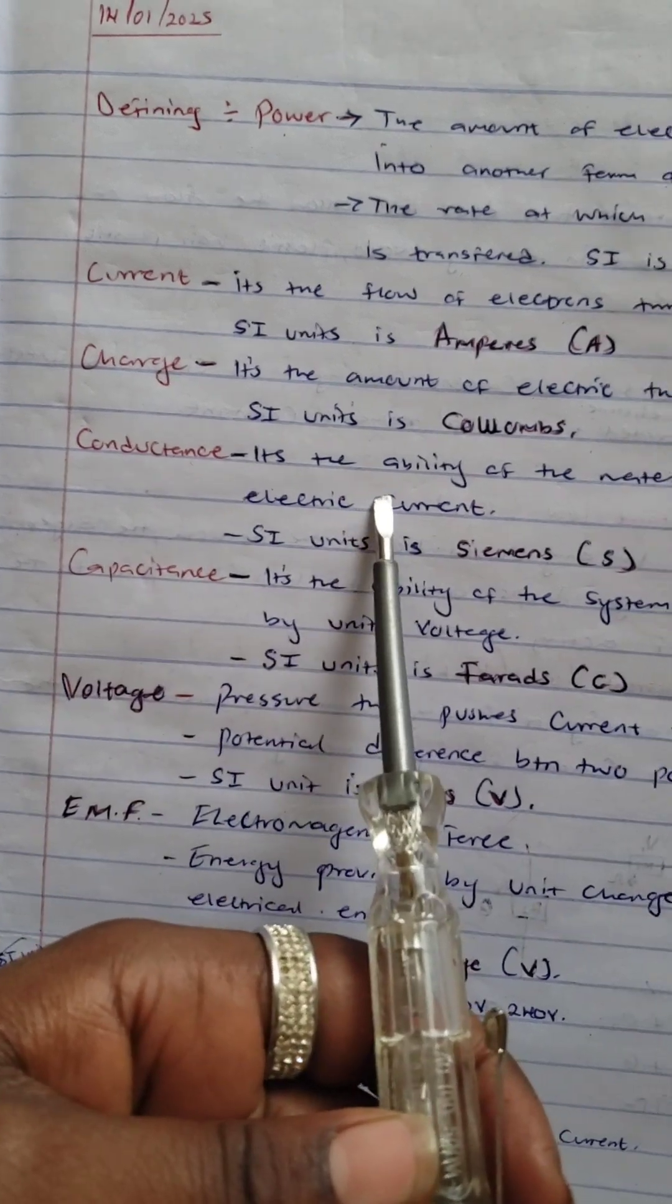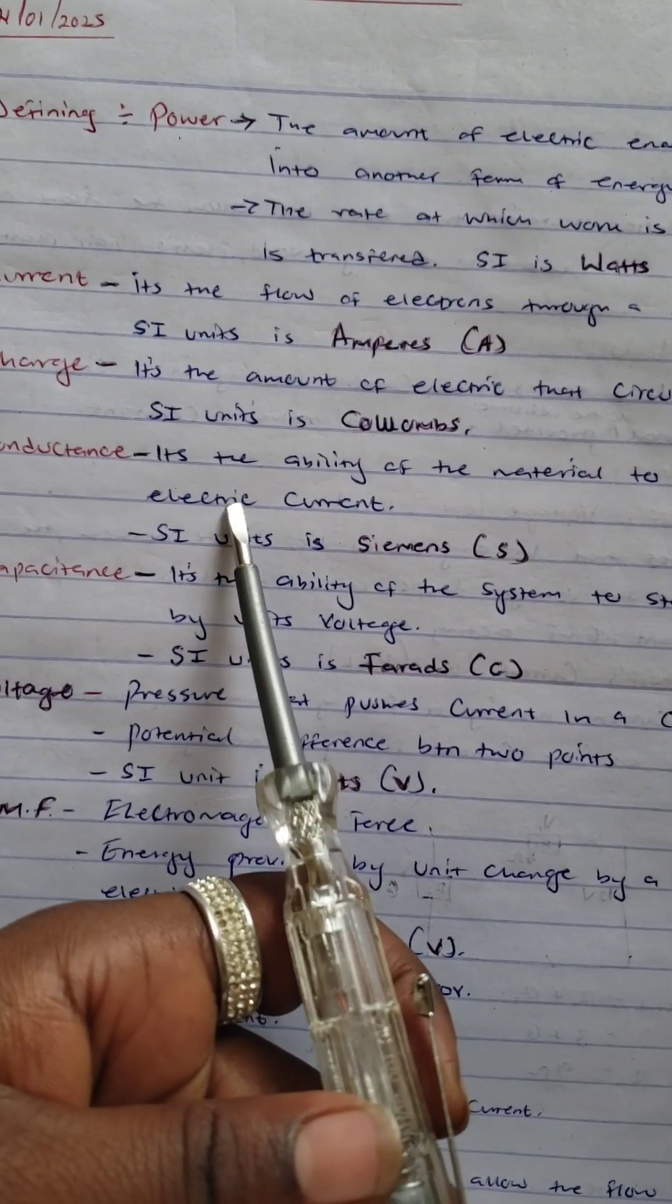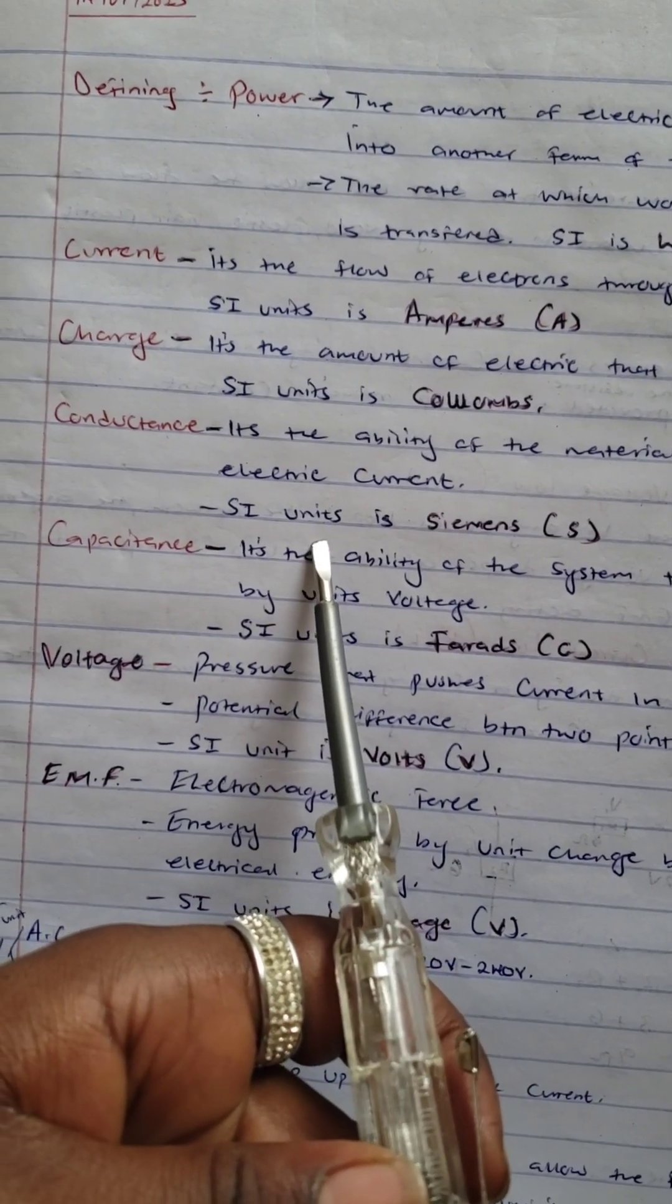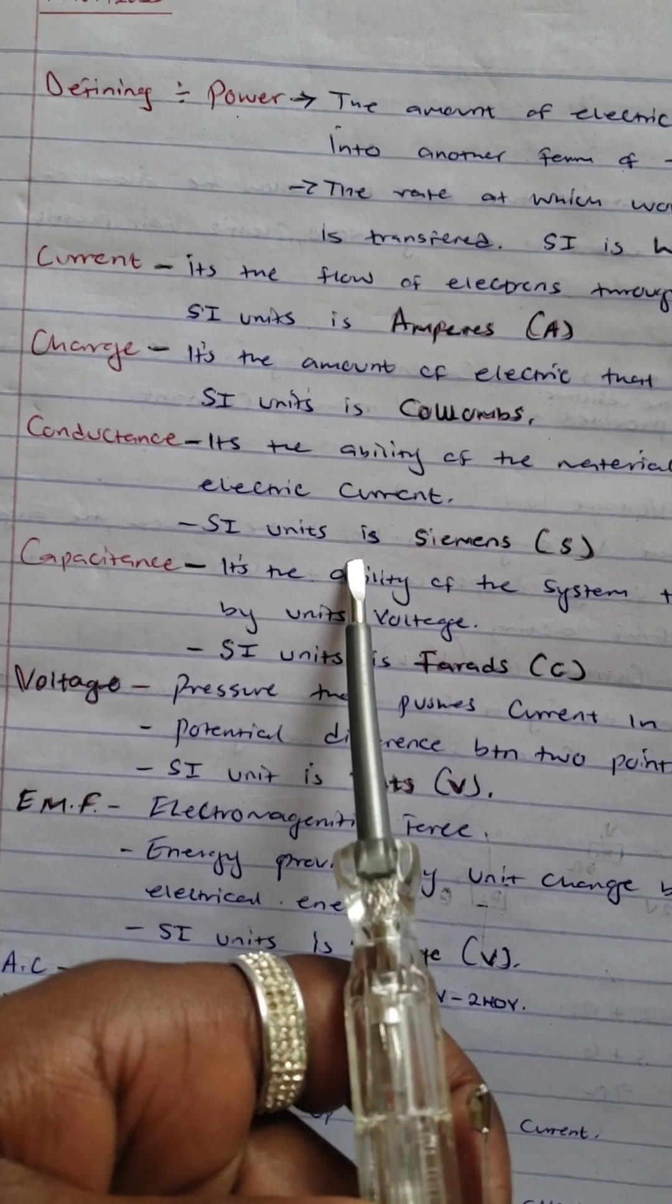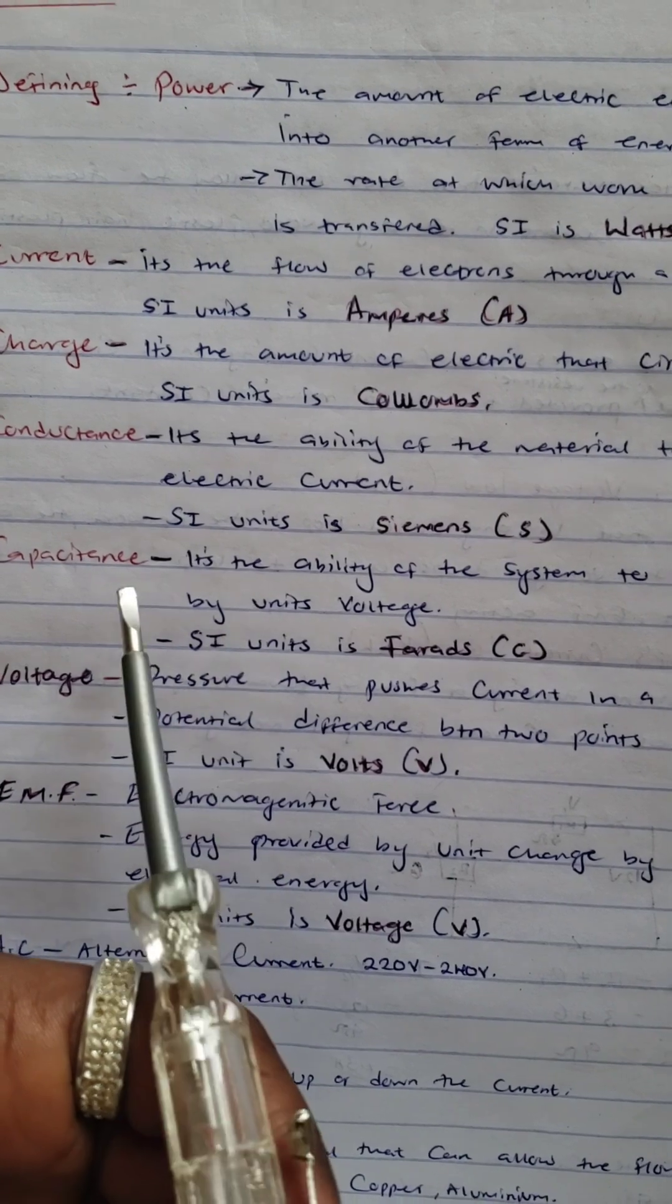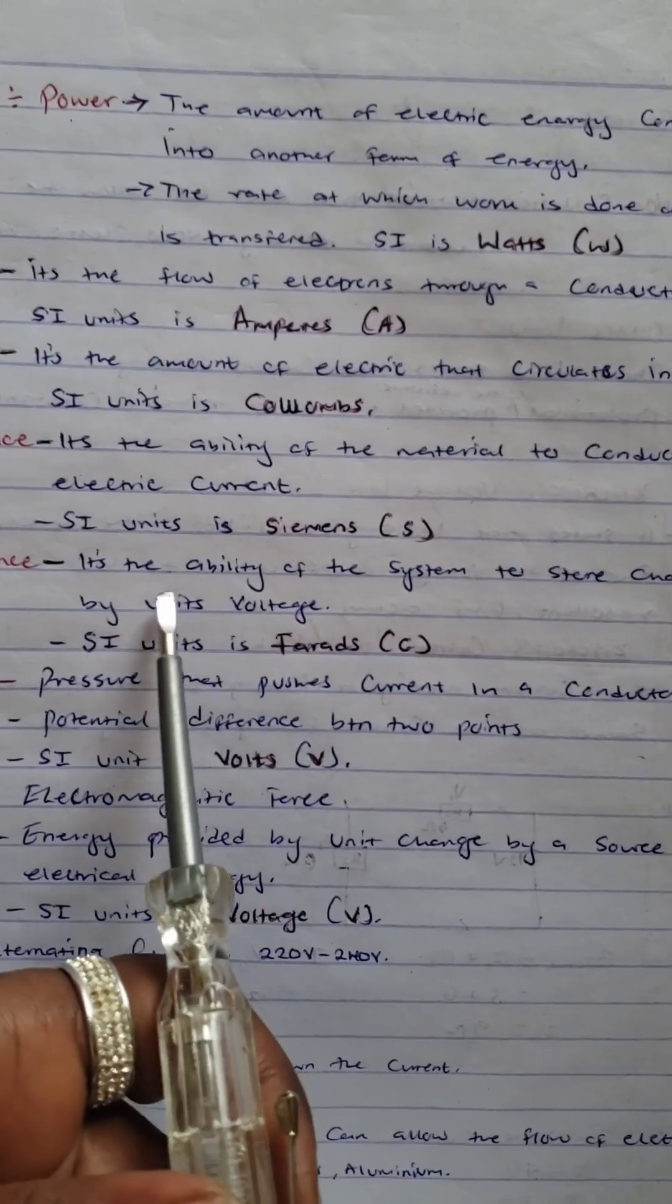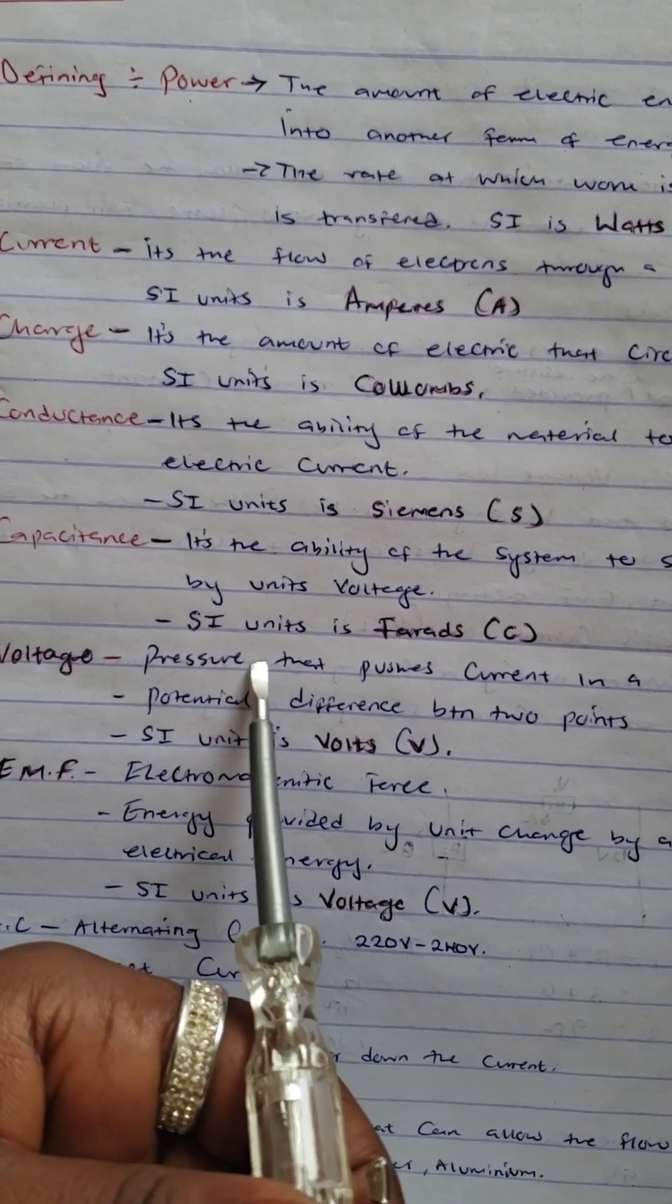Define conductance. Conductance is the ability of material to conduct electric current. Capacitance is the ability of the system to store charge by unit voltage. The SI unit of capacitance is...